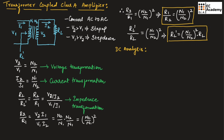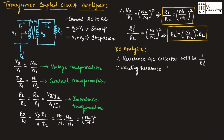Now let us understand DC analysis. This transformer will be connected across the collector of the class A amplifier, so the resistor across the collector side will be RL dash. Therefore the resistance across the collector will be 1 by RL dash. Since the winding resistance in a transformer is assumed to be equal to 0, we can write 1 by 0 equals infinity. So in DC analysis the collector resistance is infinity, and the voltage equation gives VCC minus VCE equals 0, therefore VCE equals VCC.